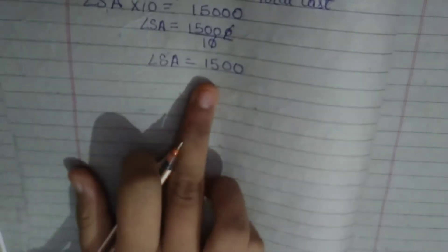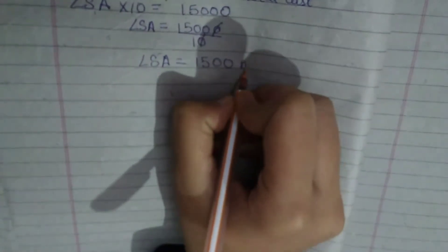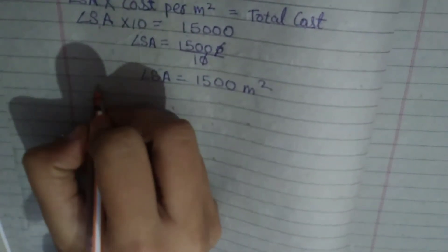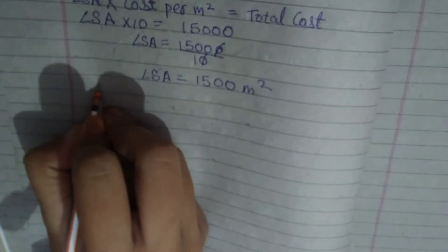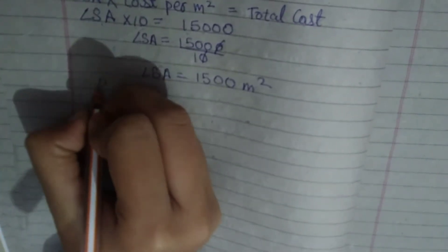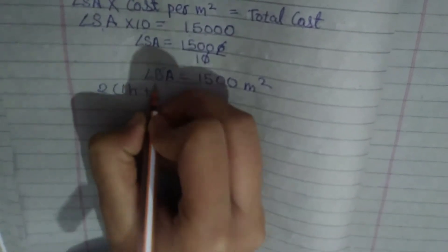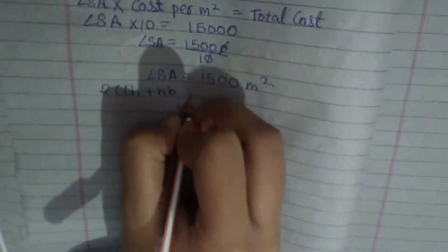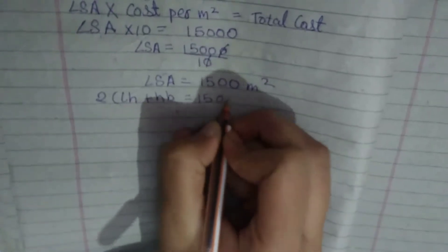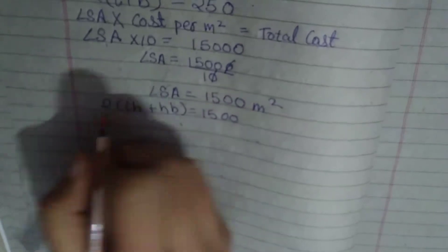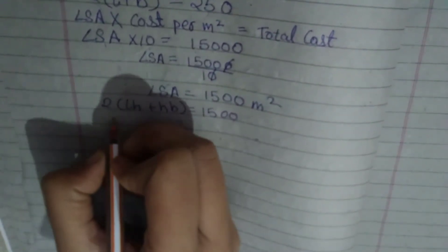We need to put it into the formula so that we can get length, breadth and height. 2LH plus BH which is equal to 1500. This is the formula of LSA, lateral surface area of cuboid.